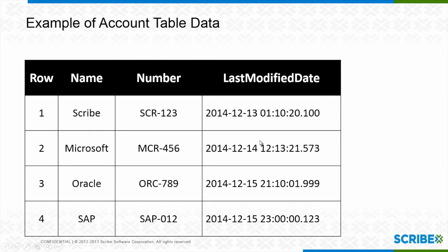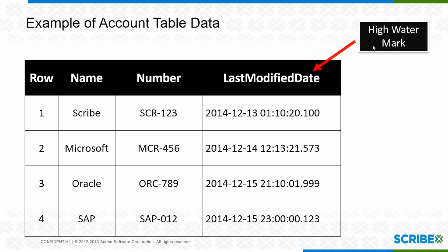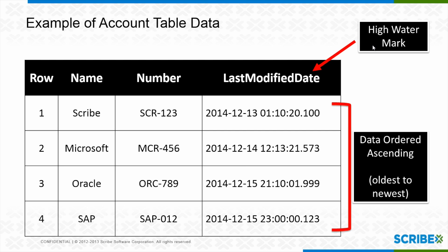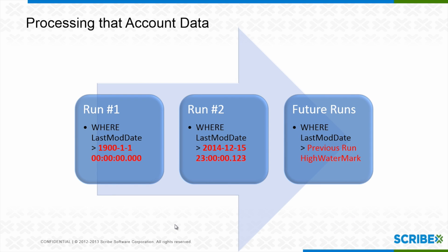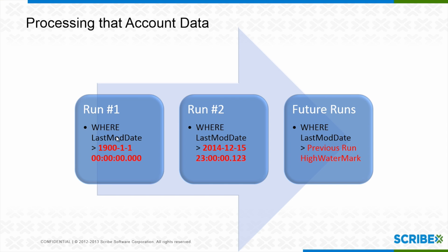Let's look at some sample data — I have four accounts. I've chosen that last modified date as my high-watermark. Scribe is going to order that data ascendingly, oldest to newest. Processing each row one by one: Scribe and Microsoft are successful, Oracle gets a row error, and SAP is successful. The next time it runs, it's going to save the date-time from the last row it processed — row number four — and get all the accounts greater than that. Even though row number three failed, it gets the date from row number four.